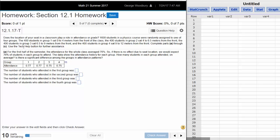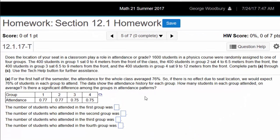As I read through the problem, I see there are 1,600 students in this physics course and they're in one of four groups, 400 in each group. For the first half of the semester the whole class averaged 76% attendance. The four groups averaged: group 1 had 77%, so did group 2, but group 3 and group 4 had 75% attendance.